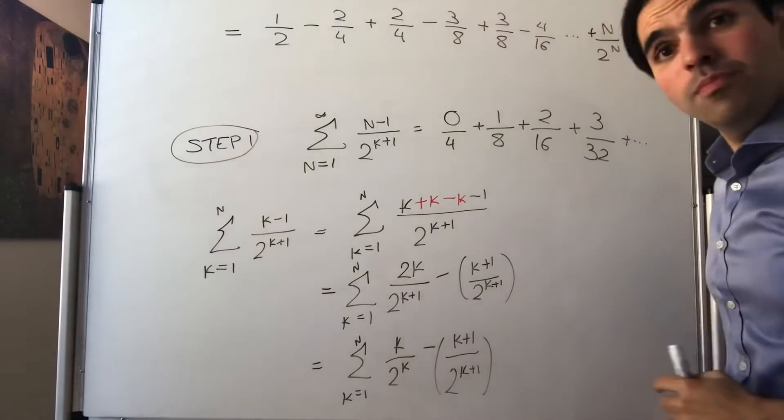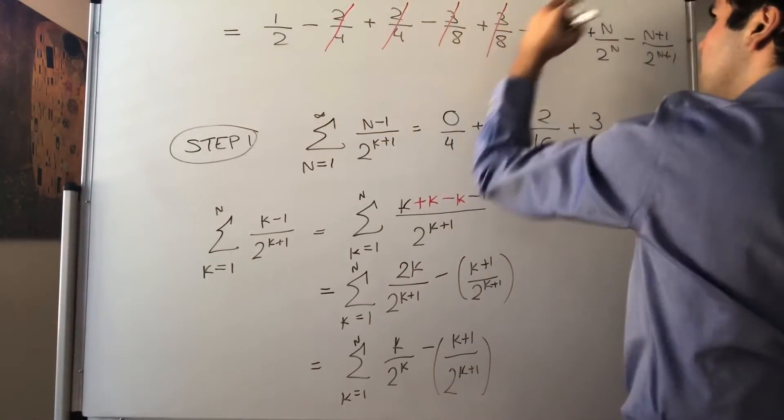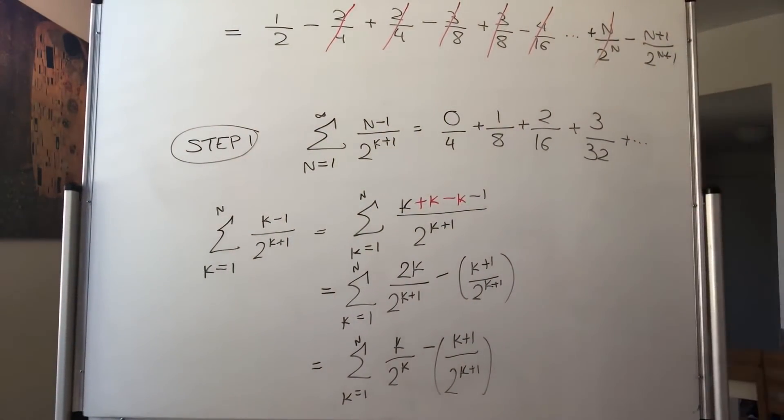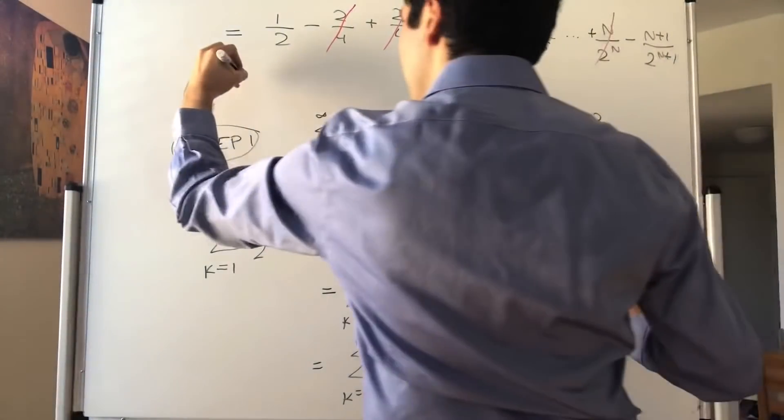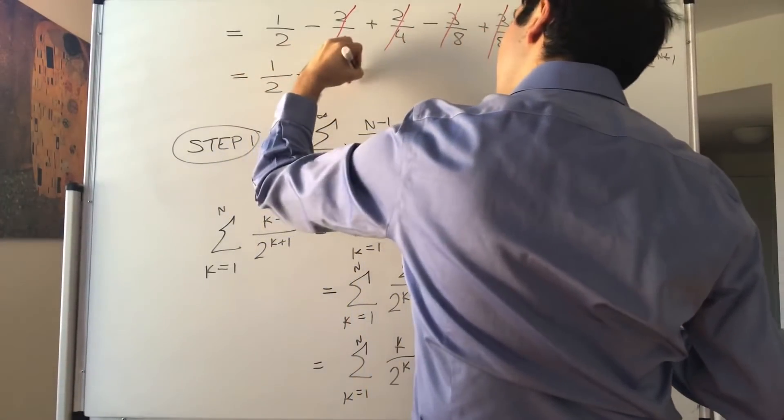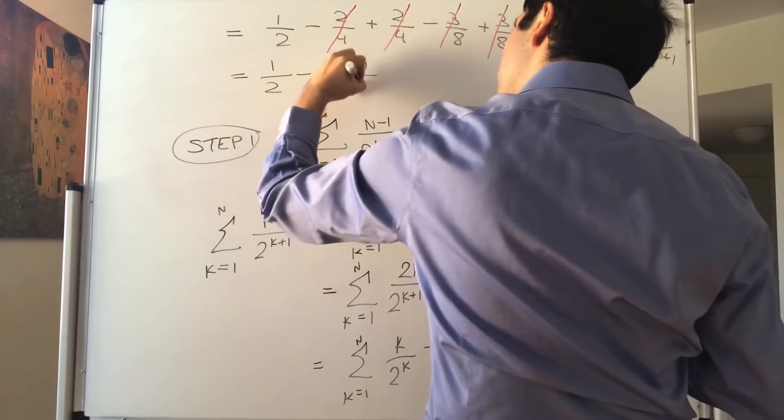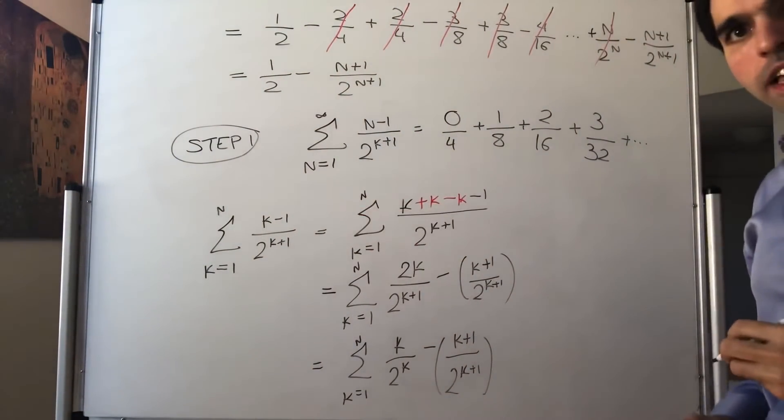And lo and behold, notice that the middle terms, they all cancel out. Which means all that's left is the 1 half and the n plus 1 over 2 to the n plus 1. So 1 half minus n plus 1 over 2 to the n plus 1. So that is what the partial sum is.